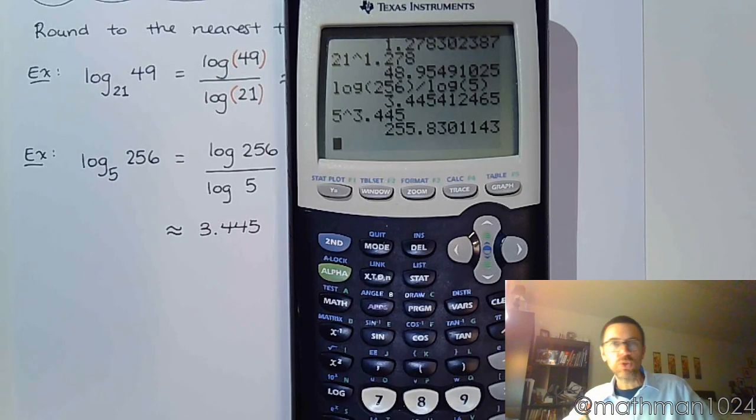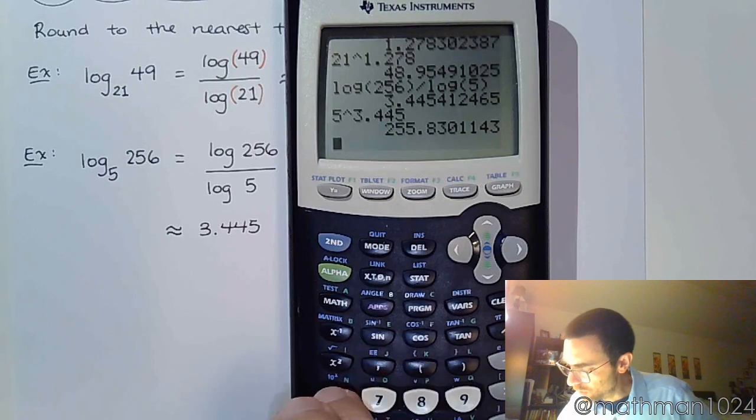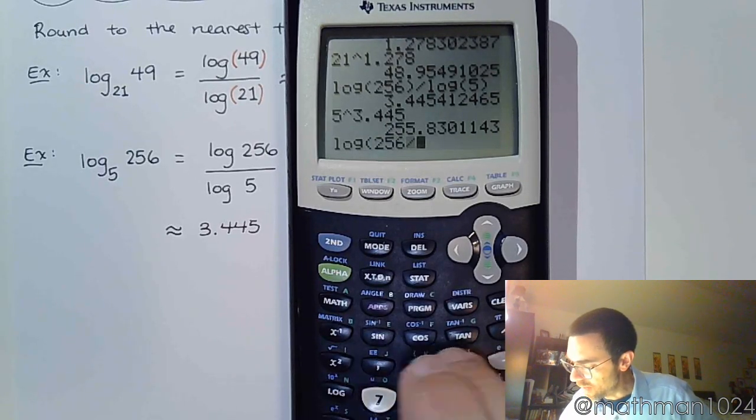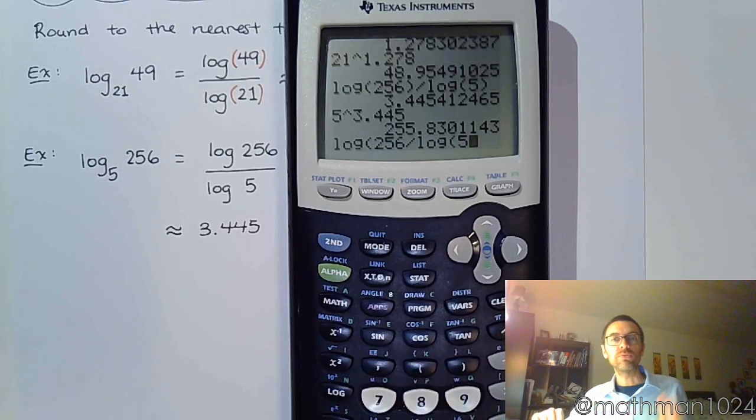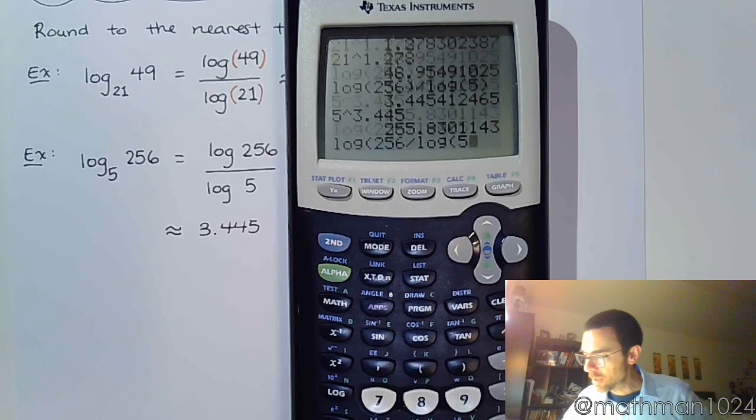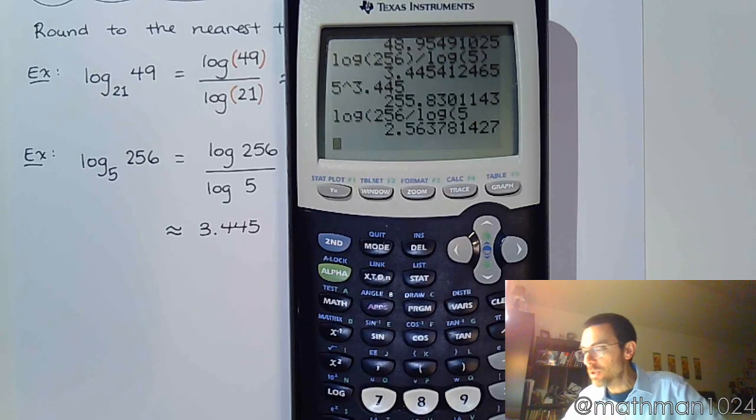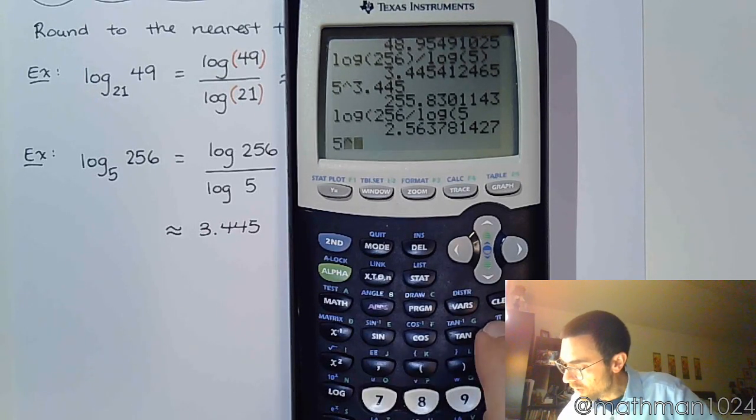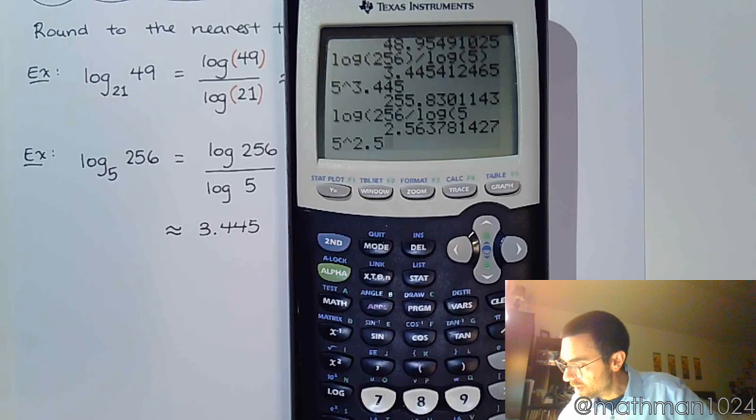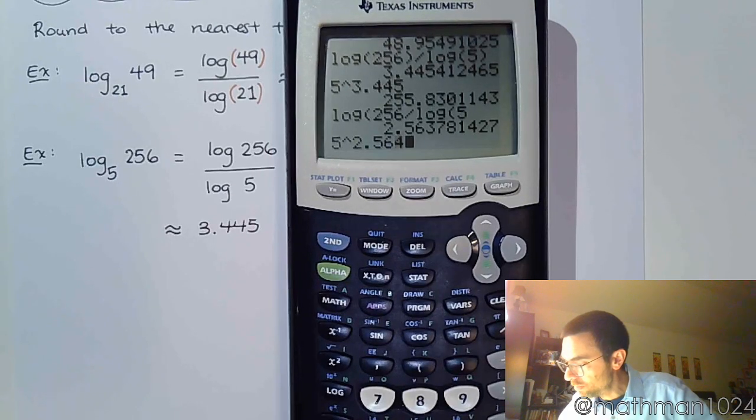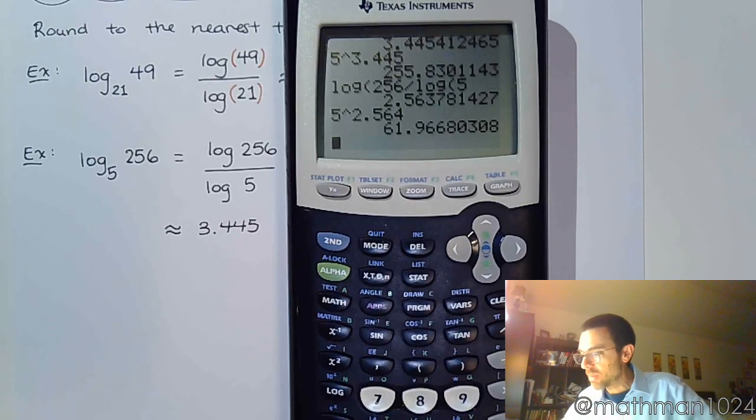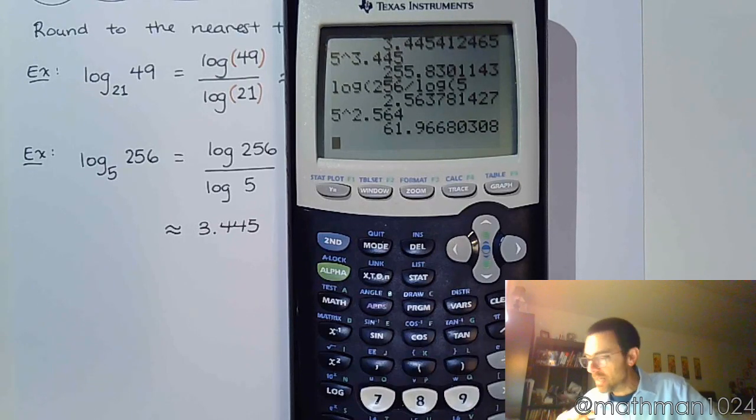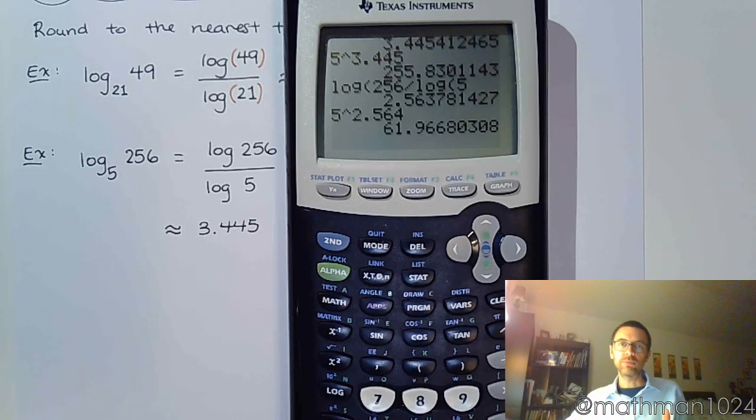Now look what happens if you don't use your parentheses correctly. If I do log of 256 divided by log of 5, maybe we're going too fast and you're not paying attention, you get this: 2.564. Alright. So if I do 5 raised to the 2.564, it's not even close. It is not even close to the 256. So you should know you did something wrong. So always make sure you take the time to check your work.